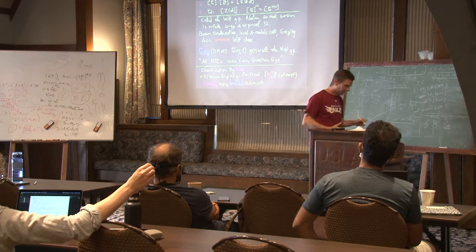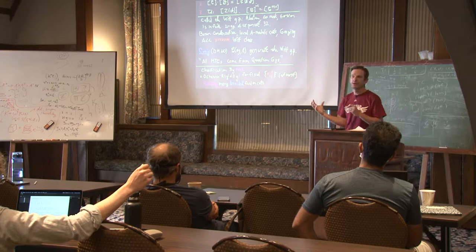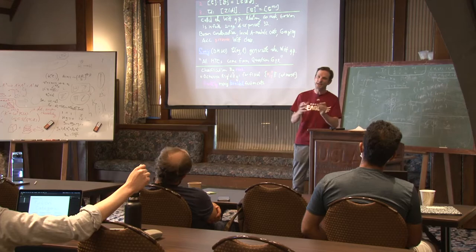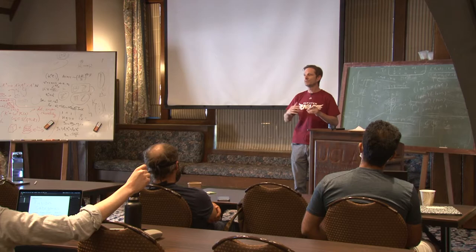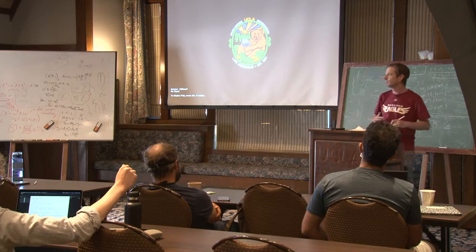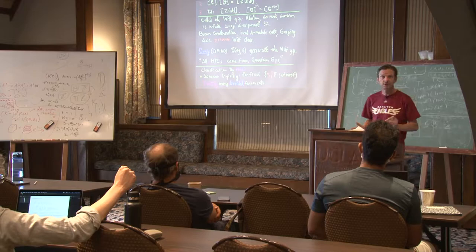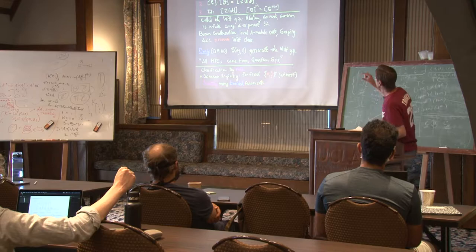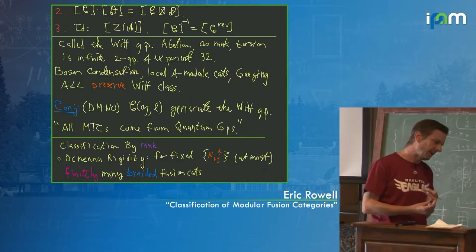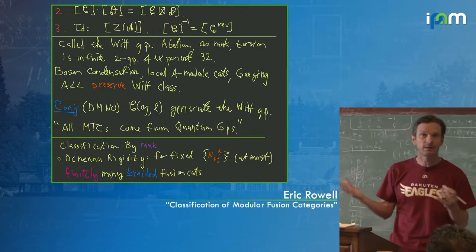If that conjecture holds, every Witt class contains a quantum group category, and all you have to do is take quantum group categories and perform all gaugings — which we don't necessarily know how to do yet — by symmetries of some algebra objects and so forth. It's a conjecture that these constructions preserve the Witt class. As far as I know, in terms of the constructions I've been talking about, this is pretty much it.